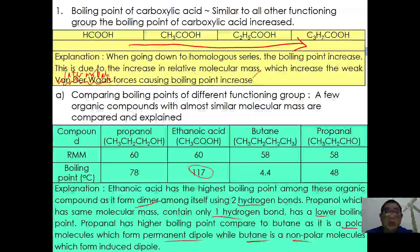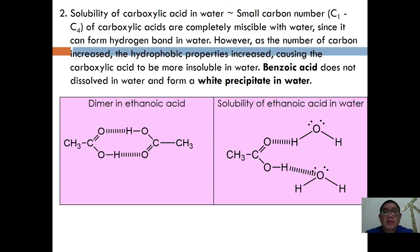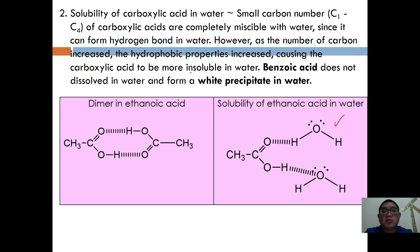Regarding the solubility of carboxylic acids in water, small carbon chains from C1 to C4 are completely soluble in water since they can form hydrogen bonds. However, as the number of carbons increases, hydrophobic properties increase, causing carboxylic acids to become more insoluble in water. Benzoic acid does not dissolve well in water and forms a white precipitate or white suspension.